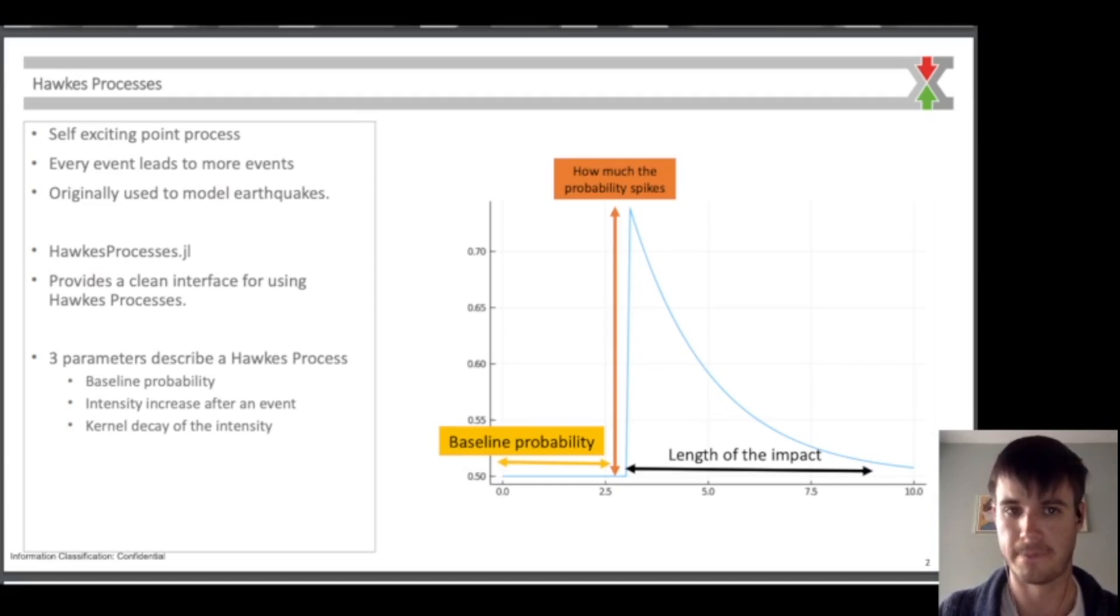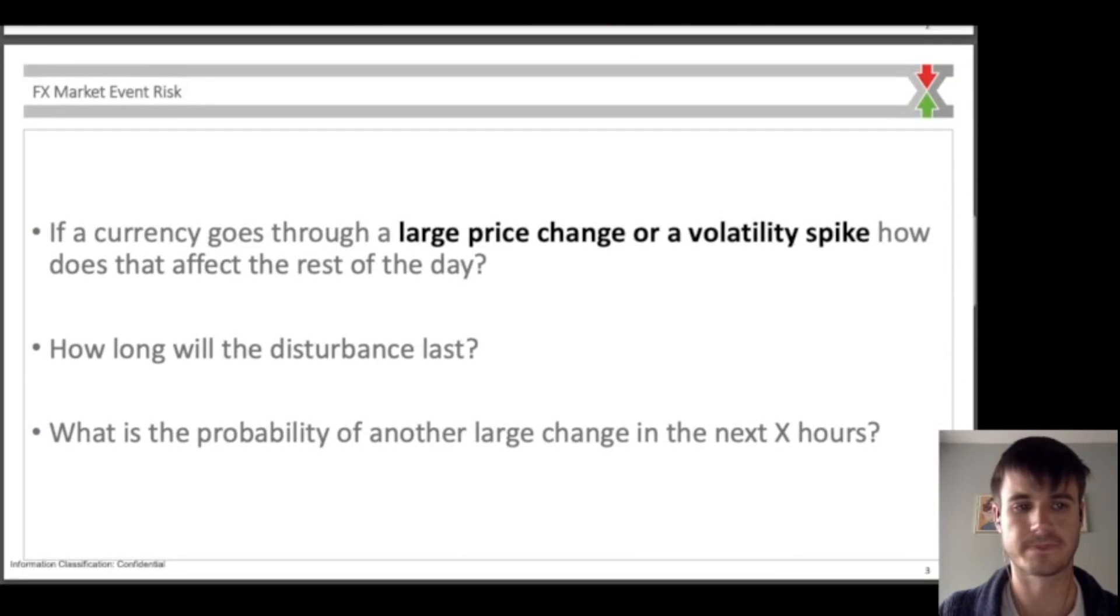What counts as an event in the FX market? If a currency goes through a large change in price or volatility, how does that affect the rest of the day? In this case, an event is any large change in prices or volatility. Using a Hawkes process model, we can understand how long the disturbance will last and the probability of another large change in the next X hours.